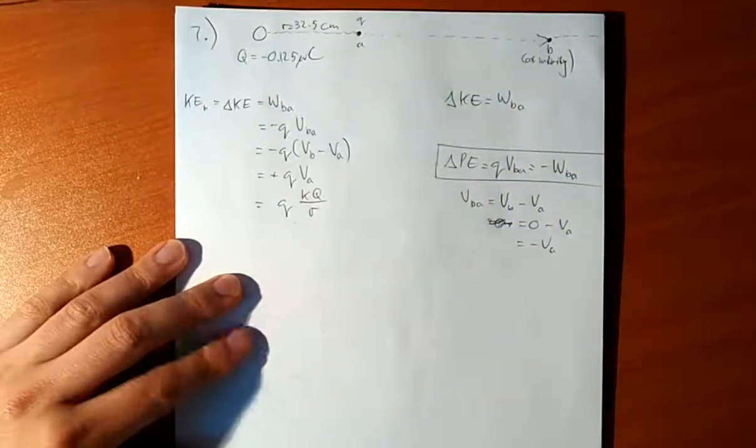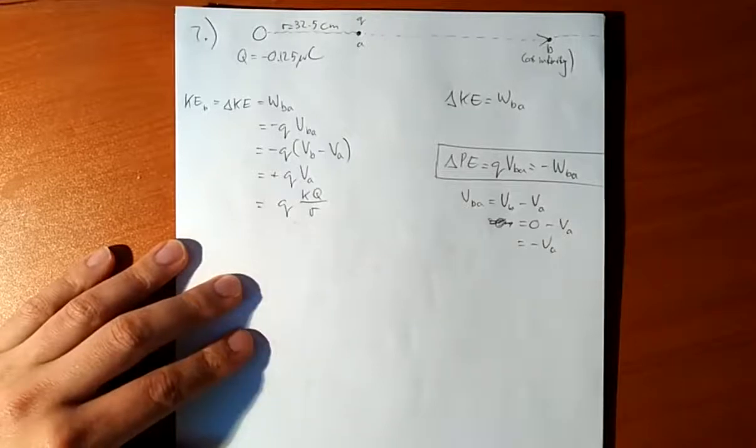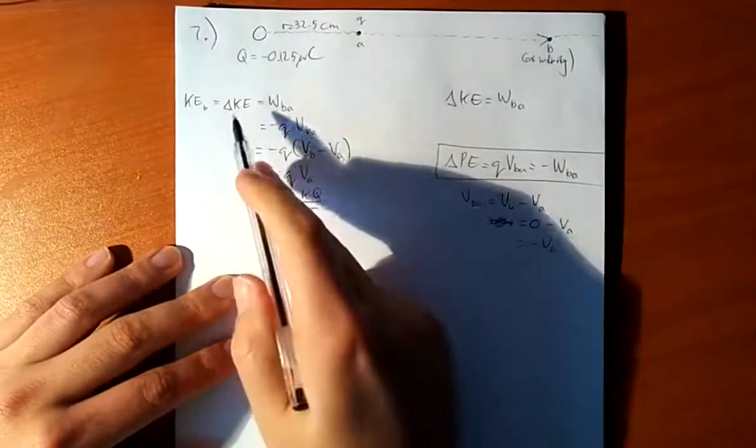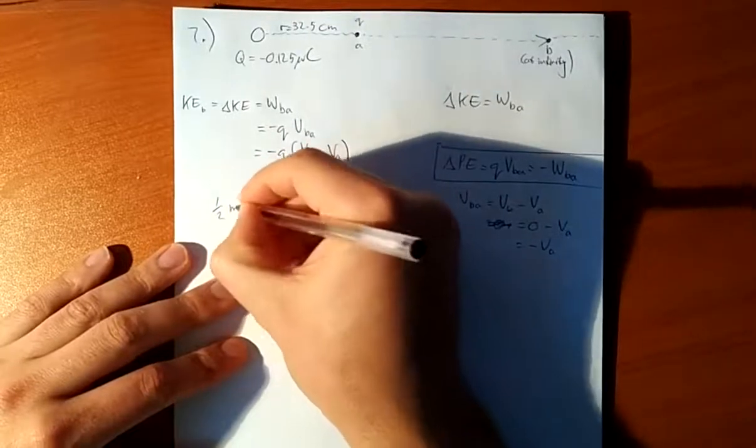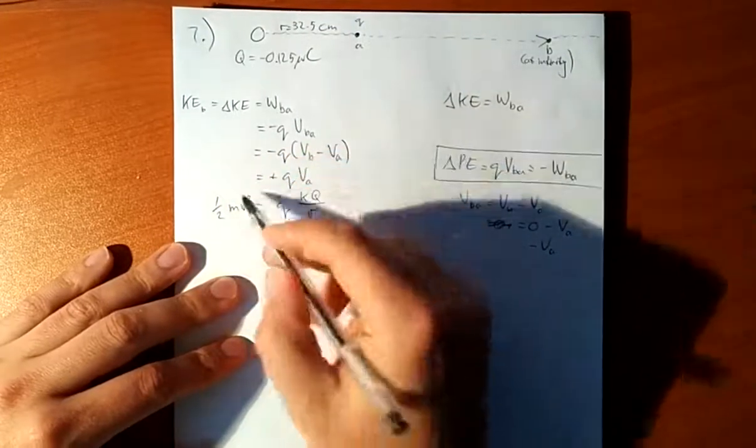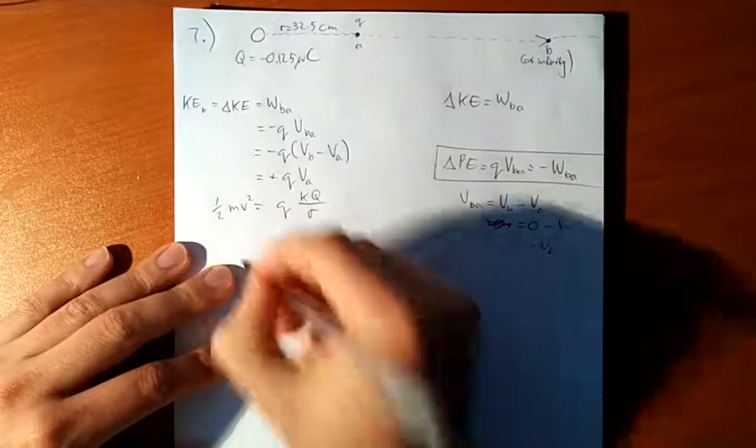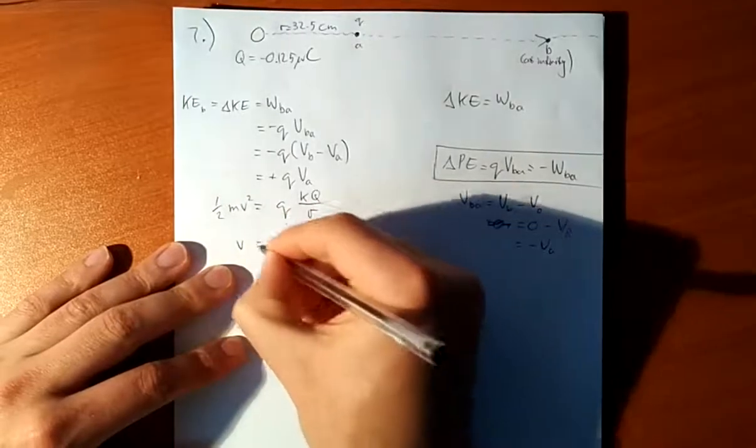K little Q over R. Okay. Interesting. So, that is the kinetic energy. This will be equal to half MV squared. Let's say V is the velocity that I'm after.